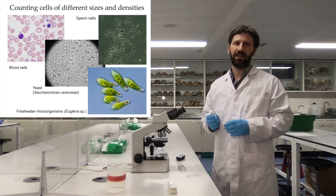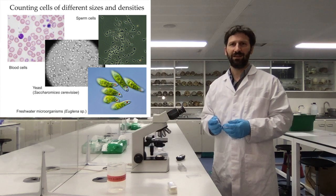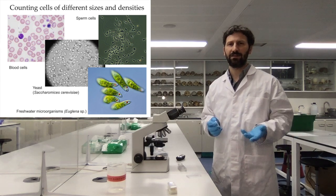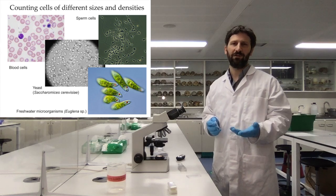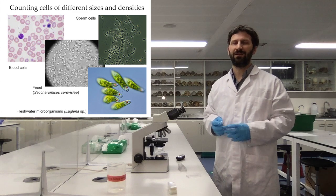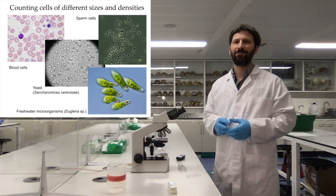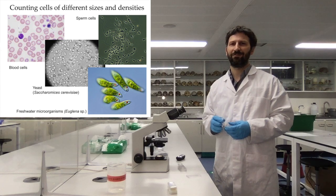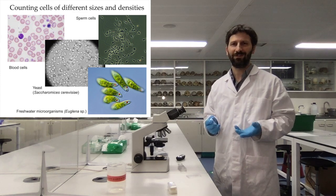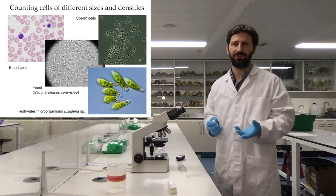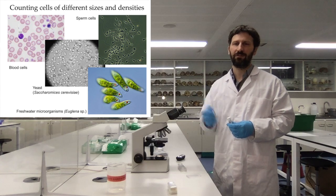Euglena gracilis is a small flagellate, unicellular protist that lives in fresh water and has many interesting features. First, it is green because it can photosynthesize — it has chlorophyll — but if there is no light, it can also consume organic matter as a heterotroph. So it can be both autotroph and heterotroph. Euglena also has a photoreceptor; in fact, the name Euglena means 'good eye,' indicating this eye spot that senses light, which is really nice to observe under the microscope as a red spot.